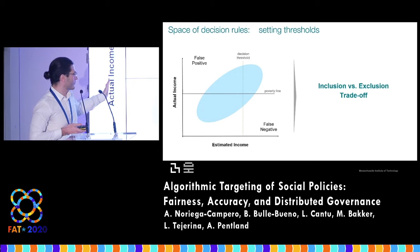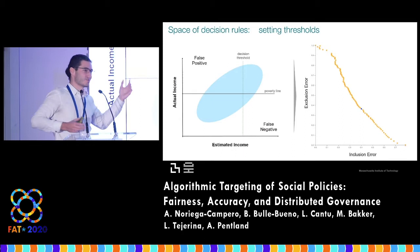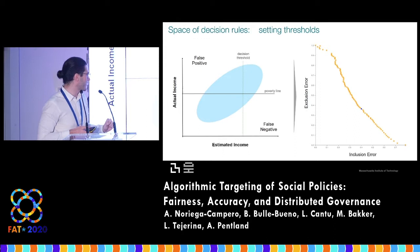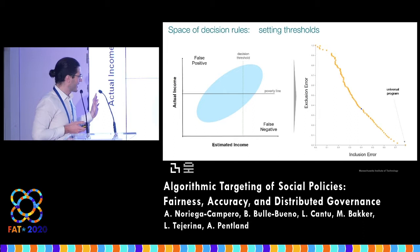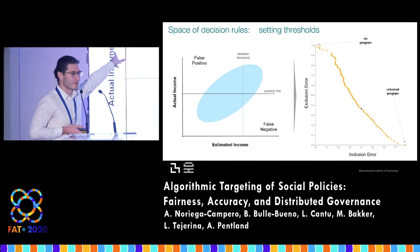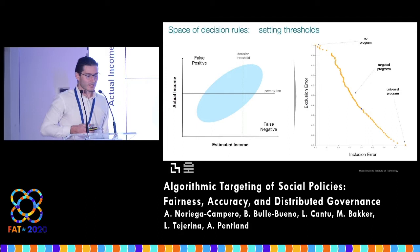That decision threshold can be more or less restrictive, and as you can imagine, there's a trade-off between exclusion error and inclusion error. We call this the exclusion error versus inclusion error curve, which is basically very similar to an ROC curve. You'd like to be at zero-zero with no error in the lower left corner. The universal program is depicted by the point with maximum inclusion error but no exclusion error. The no-program is on the other corner, and all the interesting regions are targeted programs of varying sizes in the middle.